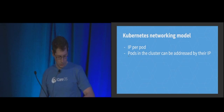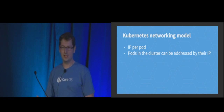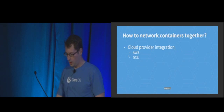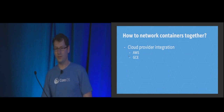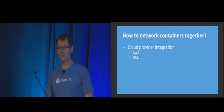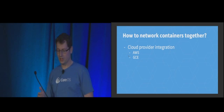However, it's one thing to say you're going to give each pod its own IP, and it's a different thing to actually make it reality. So how do you actually do that? If you're running on top of a cloud provider such as AWS or GCE, then Kubernetes already ships with cloud provider plugins that use the advanced routing capabilities of those providers and program their virtual routers to satisfy the networking model Kubernetes expects.